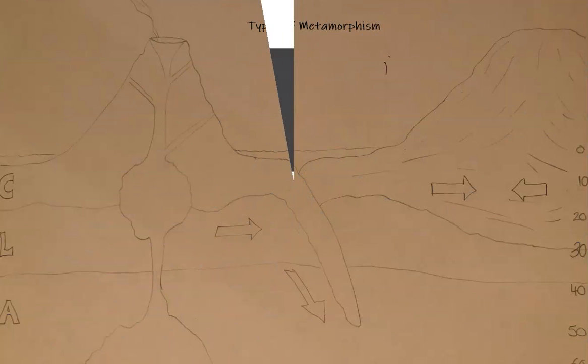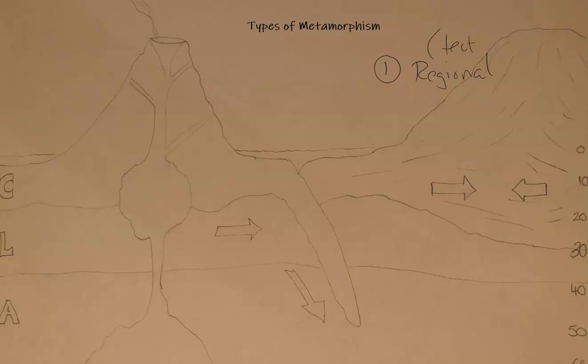The first type is Type One. This corresponds to the other video I did on types of metamorphism where I discuss what they are in general — so this is the application of that information. Type One is regional metamorphism. Regional covers a very large area and is usually related to tectonics. We have compressional stress and foliation.